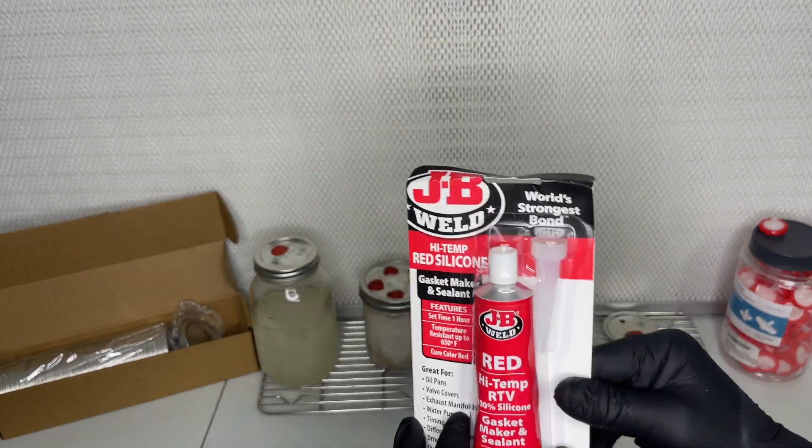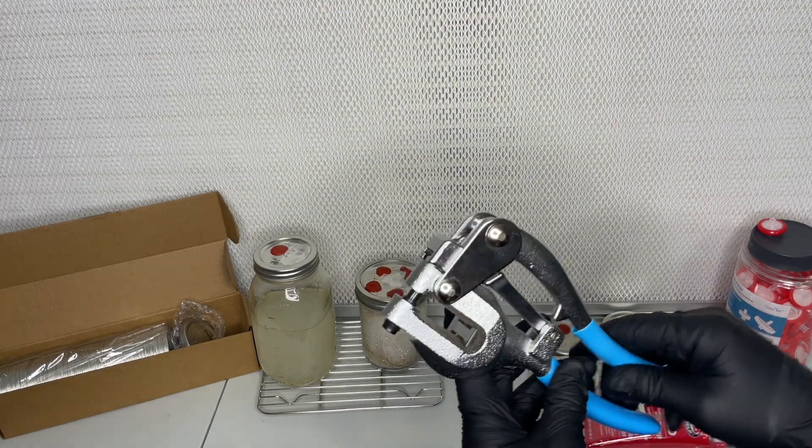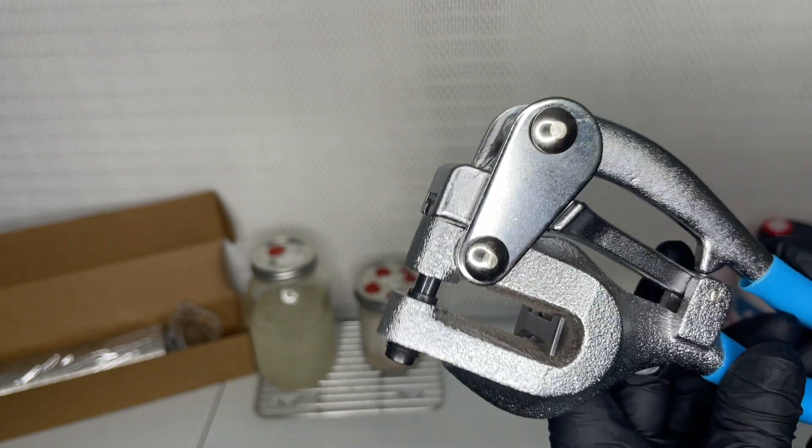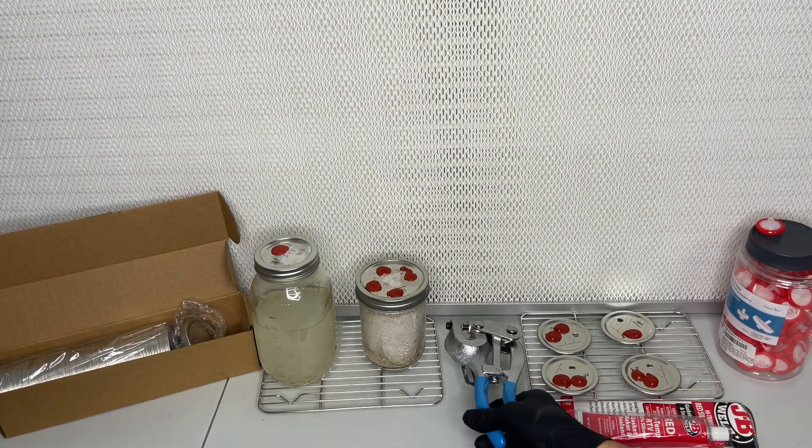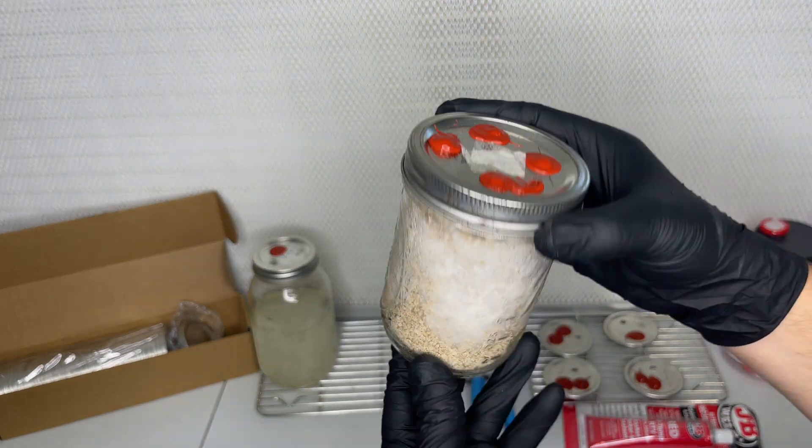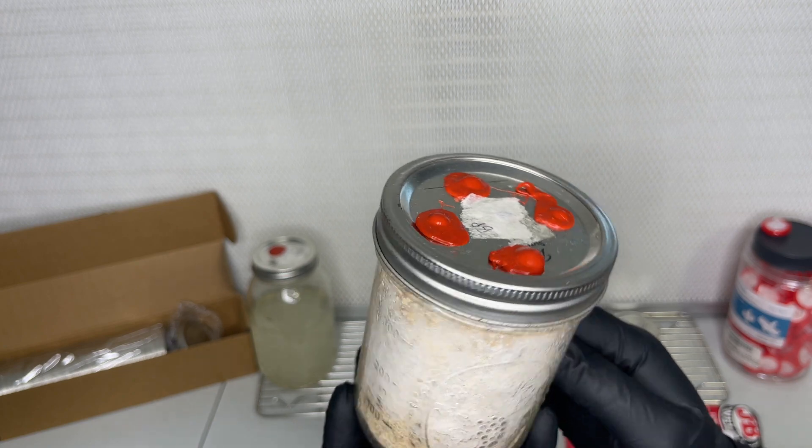This is the tube of high temp RTV silicone that I use for my injection ports, and this metal hole puncher comes in really handy when you're making a lot of lids. You can use the silicone on brown rice flour jars, liquid culture jars, grain jars, and even bags.